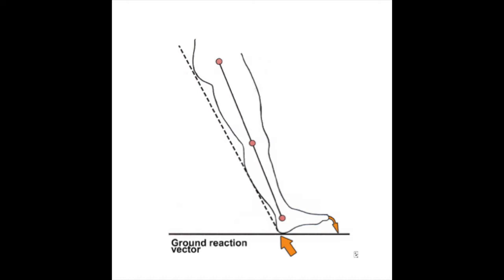Plantar flexion occurs when we need eccentric control from the dorsiflexors to control the foot to the ground. If dorsiflexors are weak and cannot eccentrically control the shock of plantar flexion during heel strike, the foot will slap the ground, also known as foot drop.